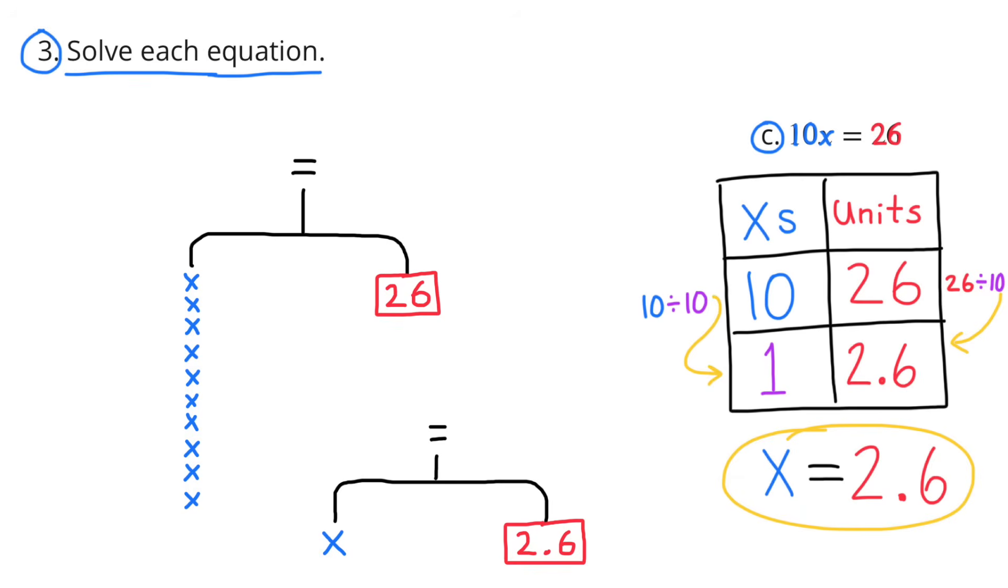The hanger shows in balance 10x's on the left and 26 units on the right. And underneath that, you see a hanger in balance with 1x on the left and 2 and 6 tenths on the right. x equals 2 and 6 tenths.